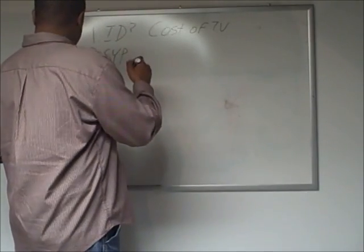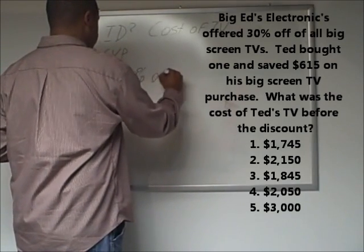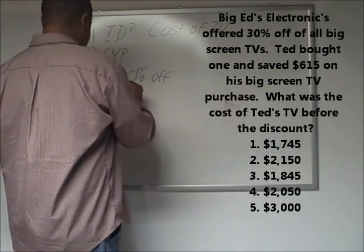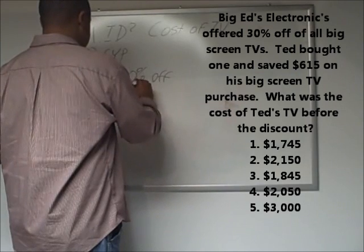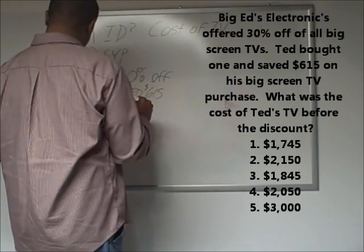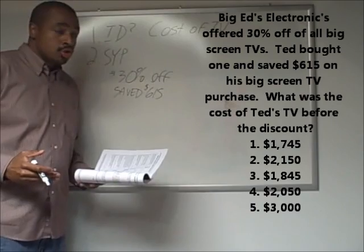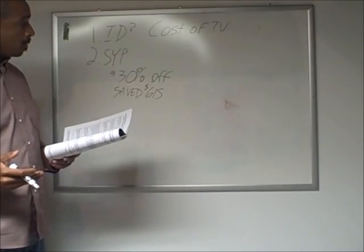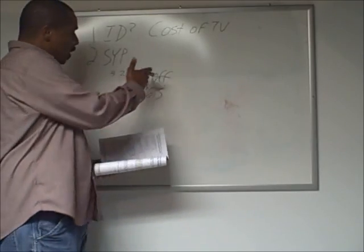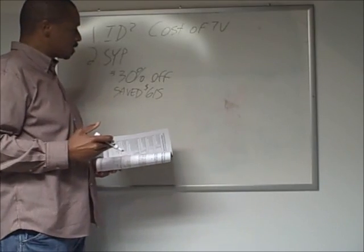We know that there was 30% off — that's one piece of information. We know that Ted saved $615. And then we know that we're looking for the cost of the TV. This is a percent problem because it has a percent in it, and 30% off was the savings, with a dollar amount of $615.